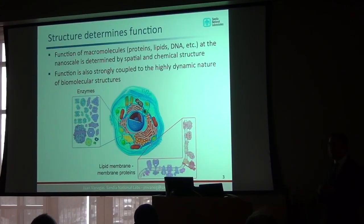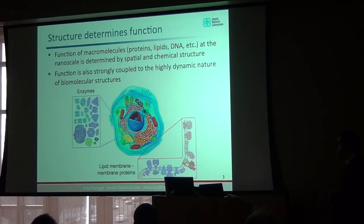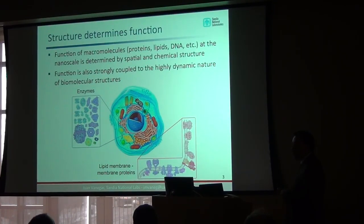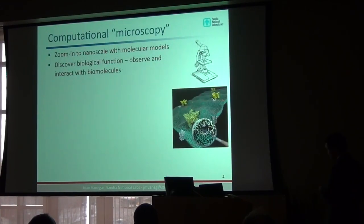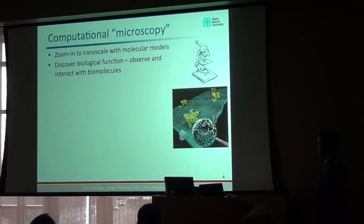These macromolecules are very dynamic, and this highly dynamic nature is also very important for their function. It's not enough to just know the structure of a macromolecule — we also need to see it in action to really understand how they work and how dysfunction relates to the entire cell. Coming back to the idea of computational microscopy, we want to use the computer as a microscope to look at processes at the molecular level and understand the physics behind them.